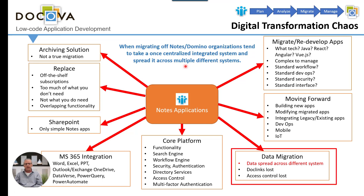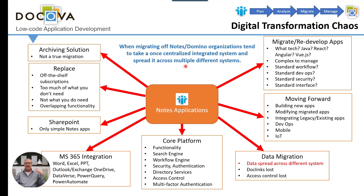And then on the bottom right — data migration. You're going to have data spread across multiple systems, so from a searching point of view you may need separate tools to amalgamate all your information so you can search across them. Doc links are lost. What about access control tied to the data — usernames, readers and authors fields? There's a whole bunch to think about. And if you're still on Notes and Domino, you're still on it because it's not easy to get off of — and you haven't found out about us yet.